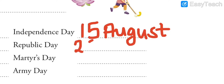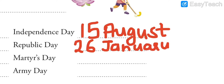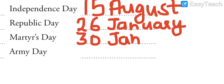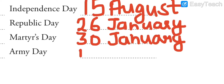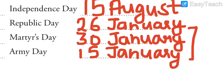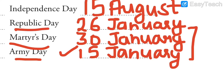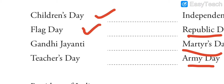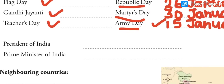We celebrate all these days in our school. Martyrs' Day is celebrated on 30th January. Army Day is celebrated on 15th January. So three days fall in January: 15th January is Army Day, 26th January is Republic Day, and 30th January is Martyrs' Day. 15th August is Independence Day. Children's Day is 14th November, Flag Day is 7th December, Gandhi Jayanti is 2nd October, Teachers' Day is 5th September.